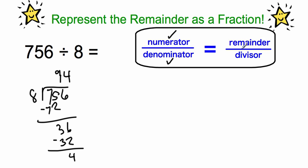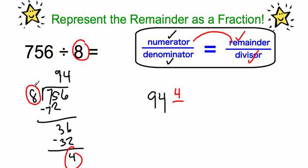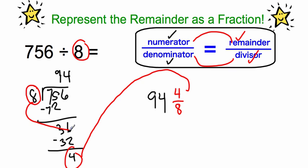To write the fraction, our remainder becomes the numerator and our divisor becomes the denominator. We have 94 as our answer. The remainder is 4, which becomes our numerator — the top number. Our denominator is our divisor, the number on the outside of the box, which is 8. So to represent this as a fraction, we have 94 and 4 eighths. I took my remainder and made it my numerator, and I took my divisor and made it my denominator.